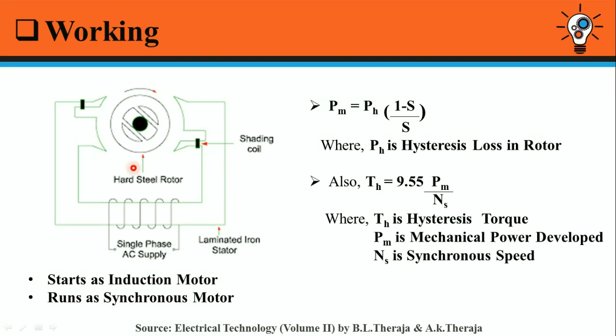As the rotor is made up of higher retentivity material, it is difficult to change the magnetic polarity once they are induced in the rotor by the revolving field. The rotor revolves synchronously because the motor poles magnetically lock up with the revolving field of opposite polarity. Due to the principle of magnetic locking, this motor rotates at synchronous speed.